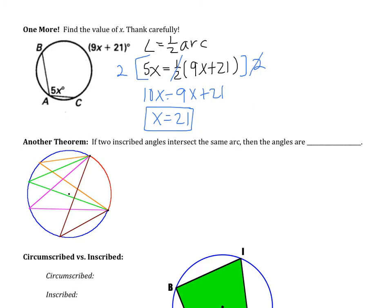Here's our next theorem: if two inscribed angles intercept the same arc, then the angles are congruent. Looking at this figure, the pink angle intercepts an arc, the green angle intercepts the same exact arc, and the orange angle intercepts the same arc. They all intercept the same arc, so the pink, green, orange, and brown angles are all congruent.